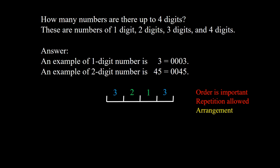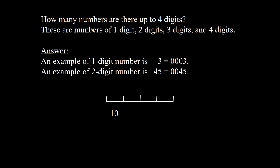The digit 3 is repeated, so repetition is allowed, and therefore this is an arrangement problem. In these 4 places there are 10 possibilities for the first place, 10 for the second, 10 for the third, and 10 for the fourth. We multiply them and get 10,000.